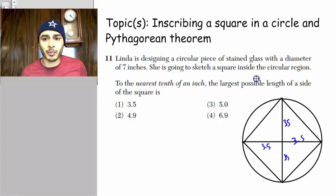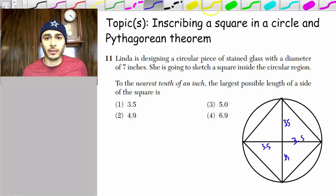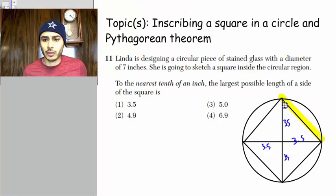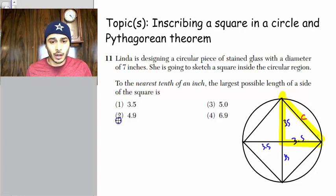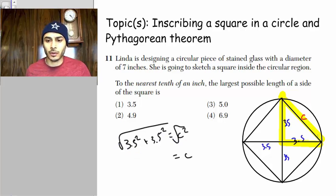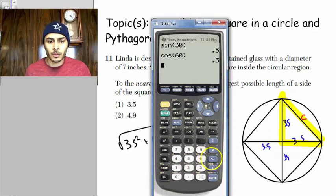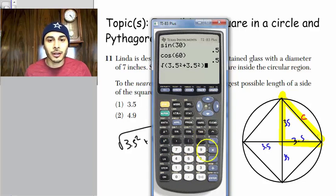What's the largest possible length of a side of the square? All right, so now look, this is really a Pythagorean theorem question, because if you want to go ahead and find that hypotenuse here, you're going to need the Pythagorean theorem. So it's going to be 3.5 squared plus 3.5 squared equals C squared, and then you're going to have to take the square root of that to get C.